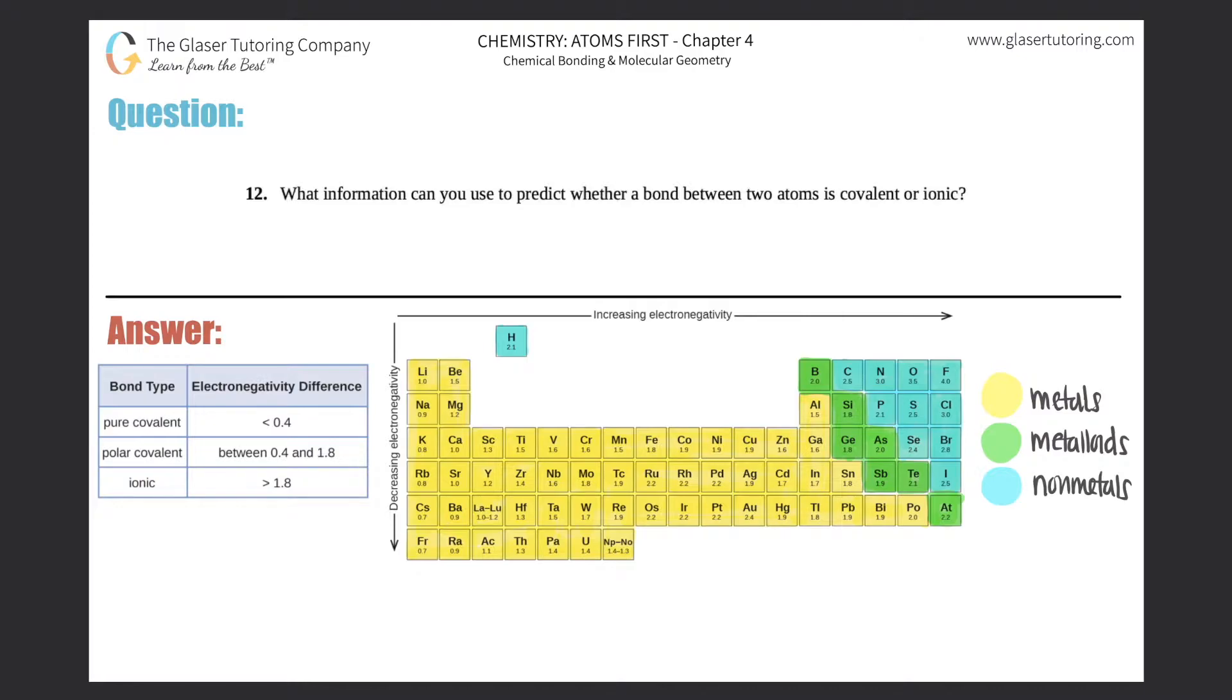Number 12, what information can you use to predict whether a bond between two atoms is covalent or ionic?